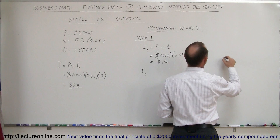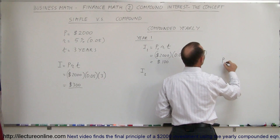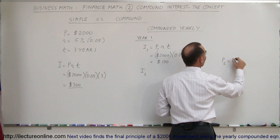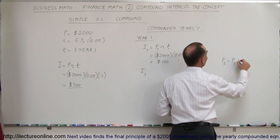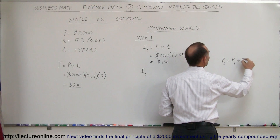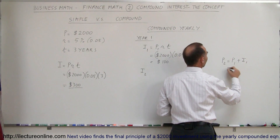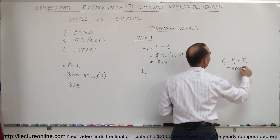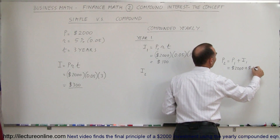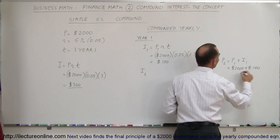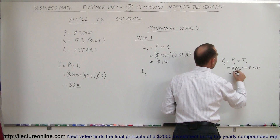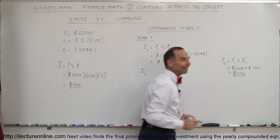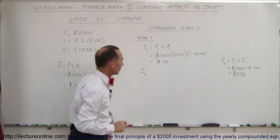That means the principal to be invested in the second year is equal to the principal in the first year plus the interest earned in the first year. In this case that's $2,000 plus the $100 that you earned, so now that's going to be an investment of $2,100 for the second year.